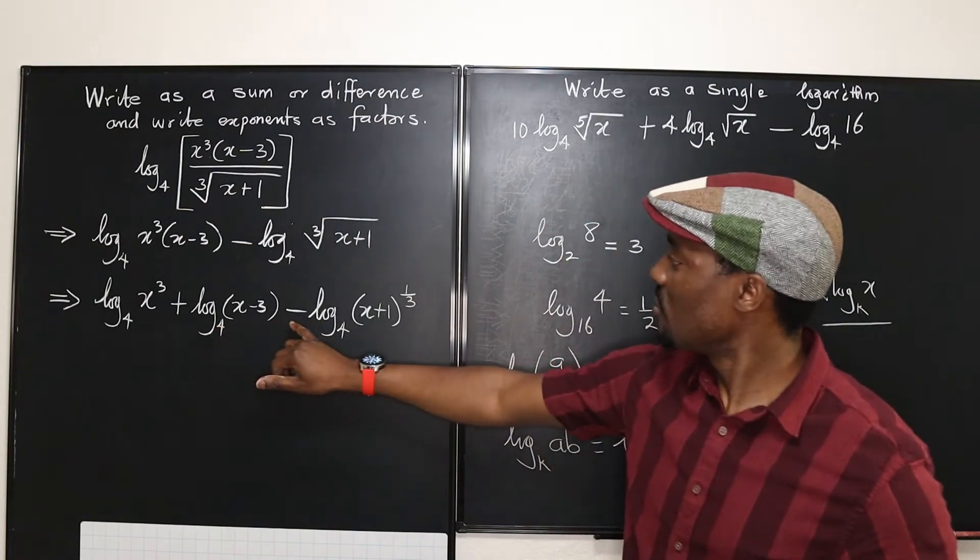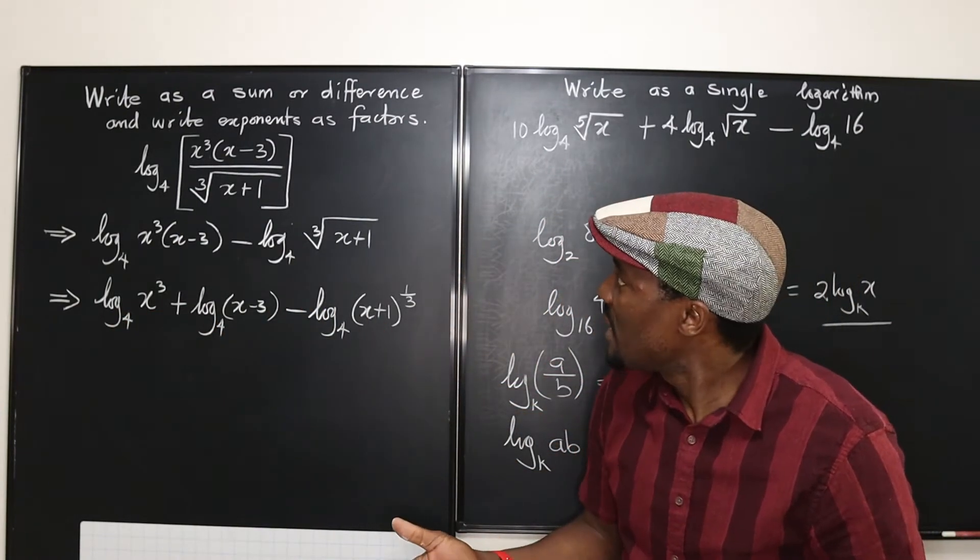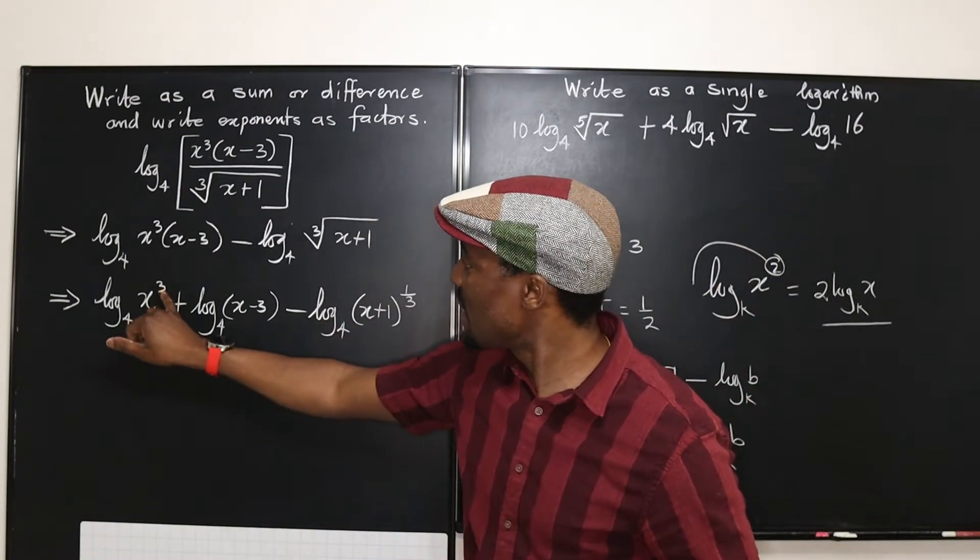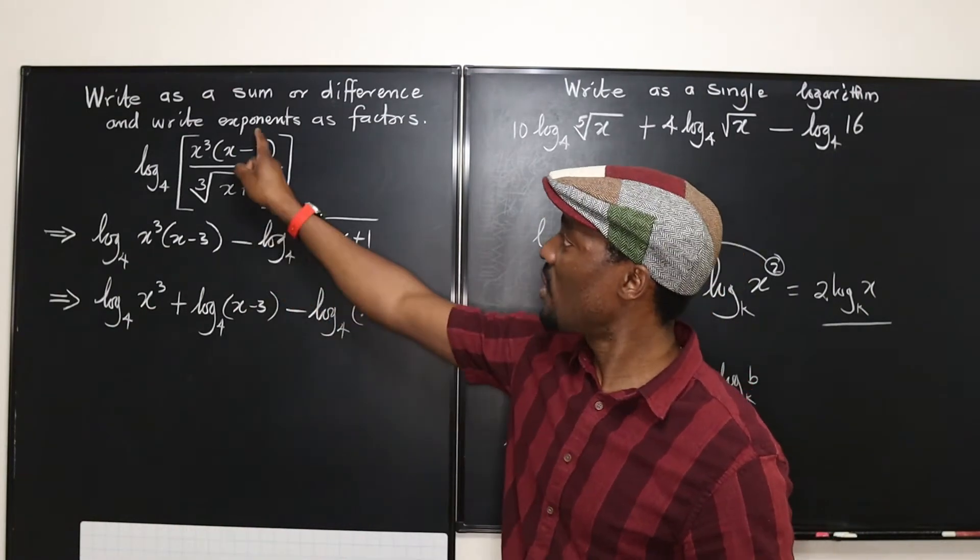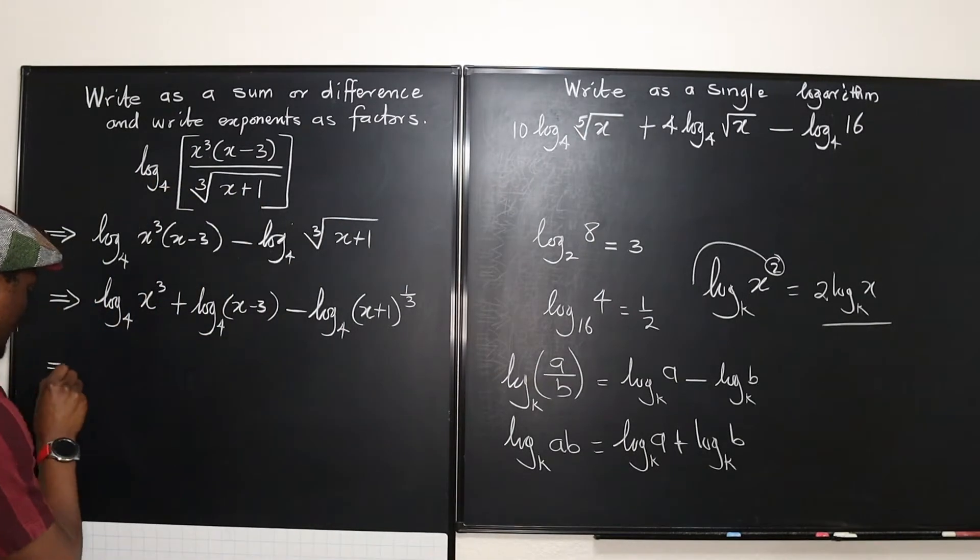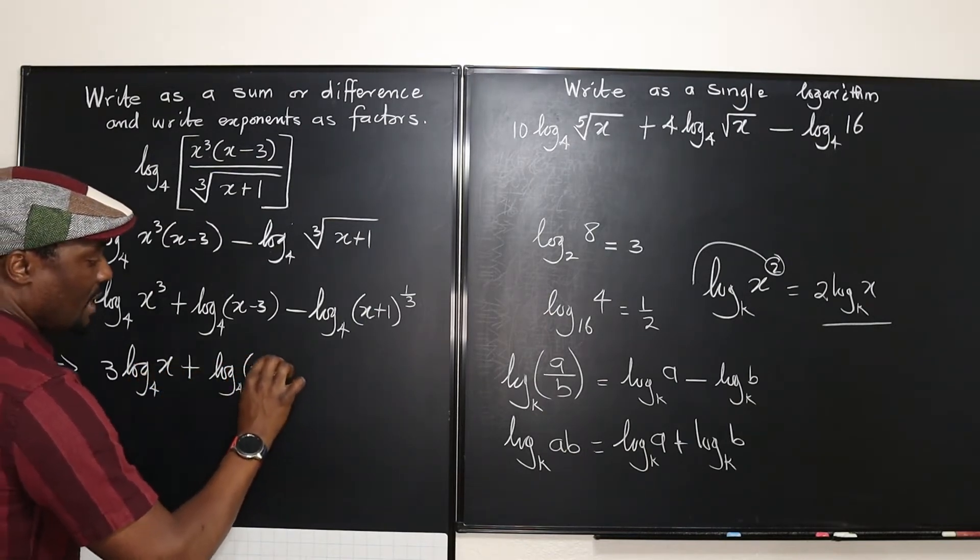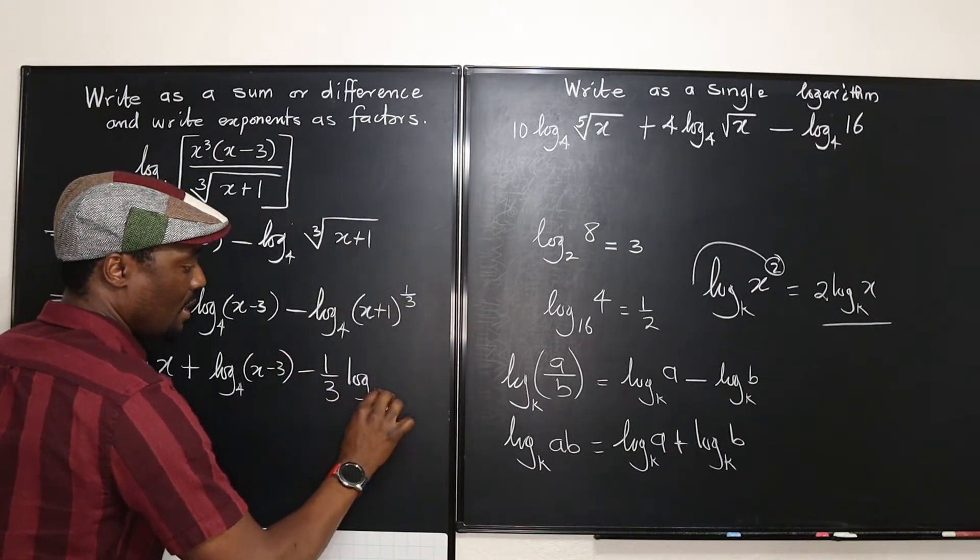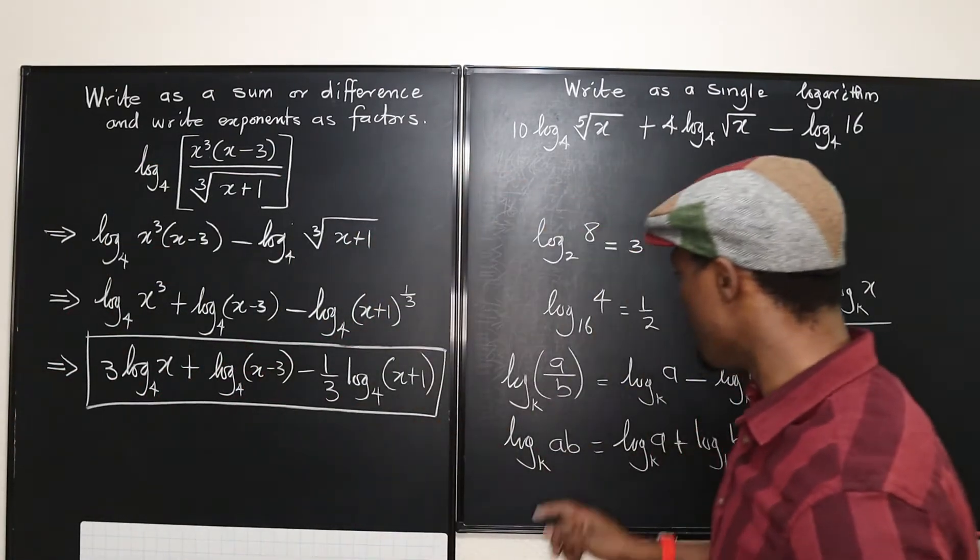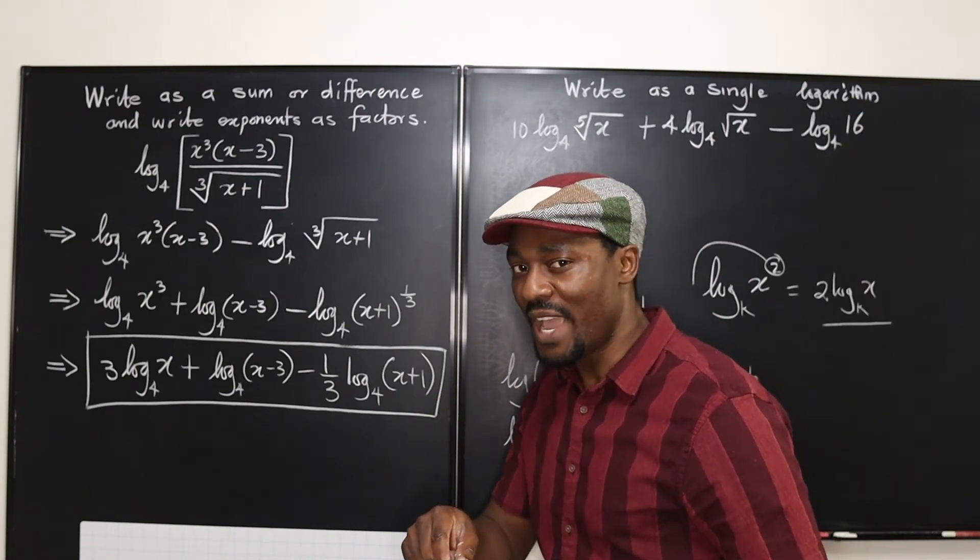Now, we have used addition and subtraction and there's nothing multiplying anything. This should be, because this term is different from this and this is different from this, there's nothing to combine. So, one more thing. The instruction says write exponents as fractions, I mean as factors rather. So, what we're going to do is every exponent has to be moved to the back. Don't forget sometimes you have to reverse this step. But the instruction clearly is to write the exponents as factors. So, this exponent goes back here, this exponent goes back here, and your work is done. So, the third and final step is to write this as 3 log to base 4 of x plus log to base 4 of x minus 3 minus 1 over 3 log to base 4 of x plus 1. Now, you see, we are done with this exercise.